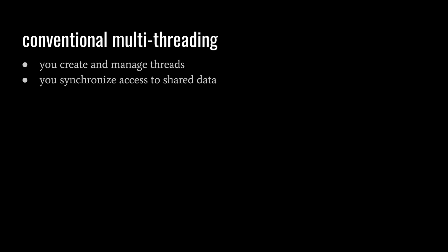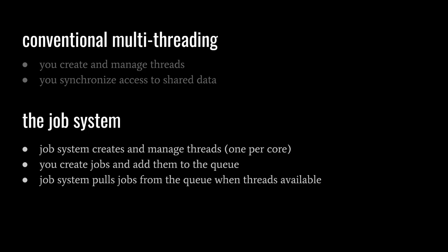Without the job system, multi-threading requires us to create and manage threads ourselves, as well as to manually synchronize access to data that's shared between the threads. When using the job system, it creates and manages a pool of threads for us, usually one per CPU core. We then create units of work called jobs and add them to the job system queue. The job system then farms these jobs from the queue to the pool of threads as the threads become available.